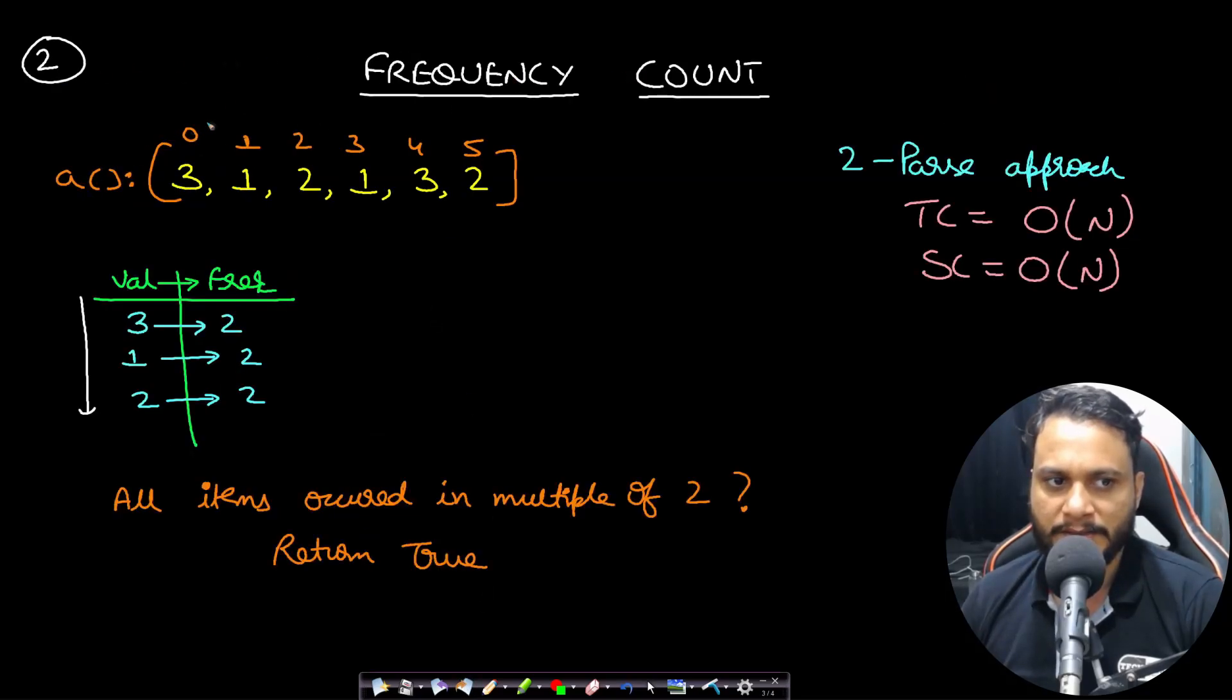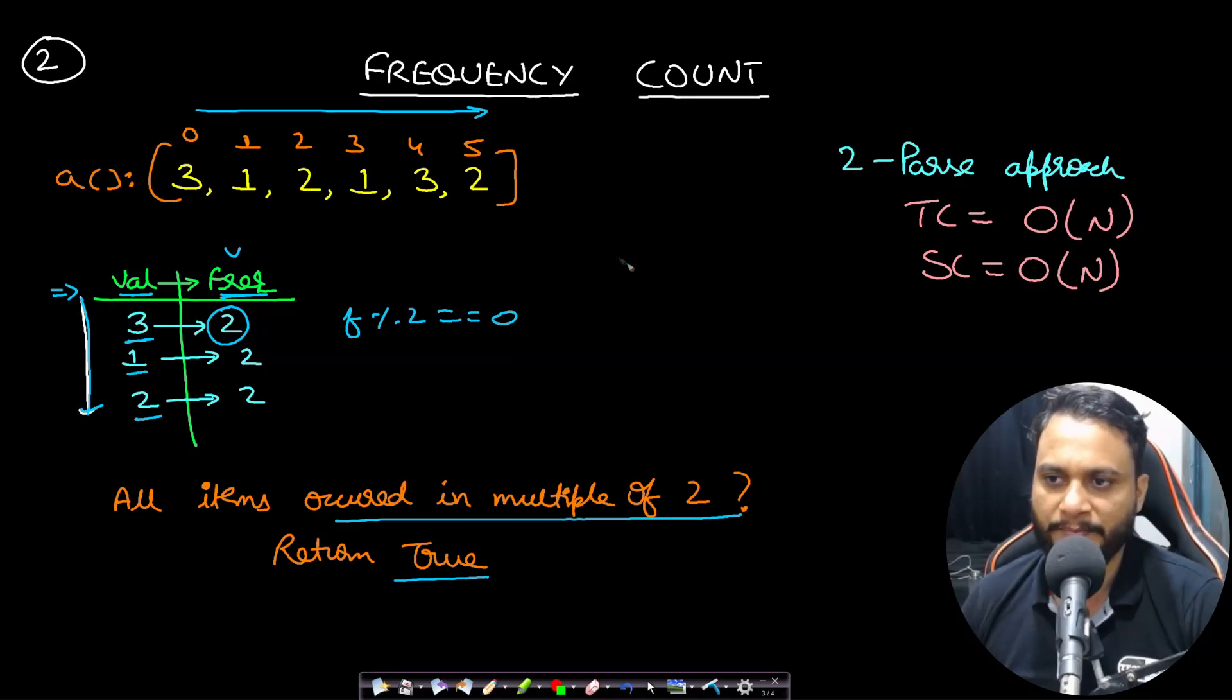Let's look at the second approach which is by using frequency count. Given the array, we will be taking a hash map where the key will be the value and the value of the map will be the frequency. Iterate through all the items and count the frequency of each item. Once you have done that in the first pass, you have to iterate through the entire map and for every key entry find out if the frequency mod of two equals zero. That means you can actually pair it up. If it is true, return true, otherwise return false. This is a two pass approach and both passes take order of n time. Therefore the time complexity is order of n and space complexity is also order of n.